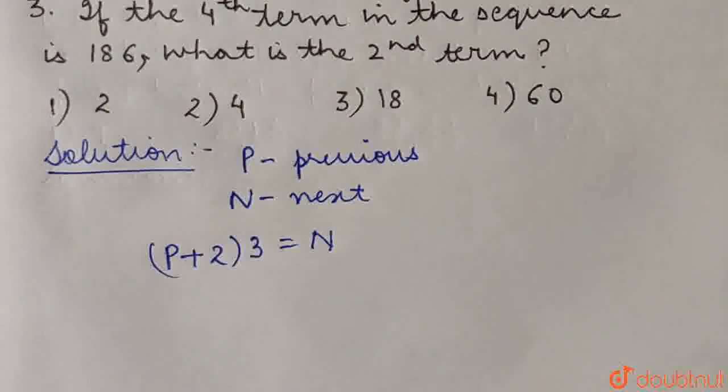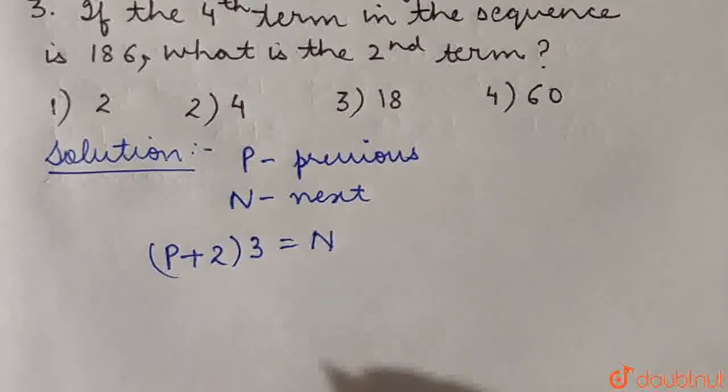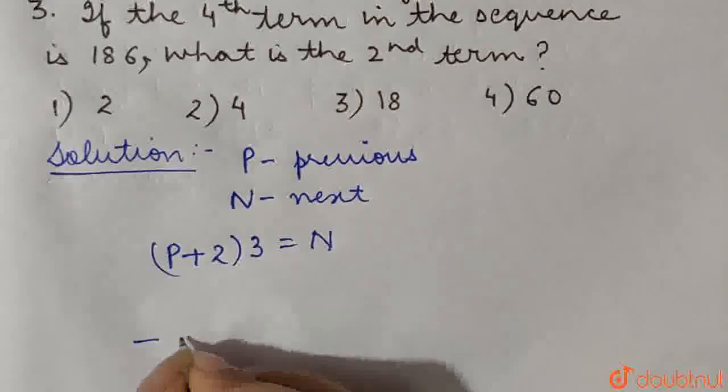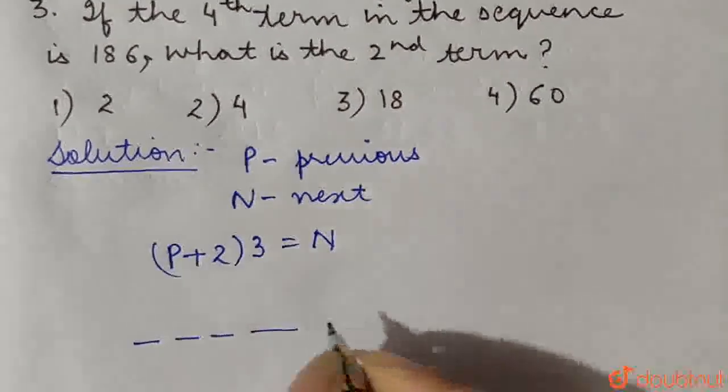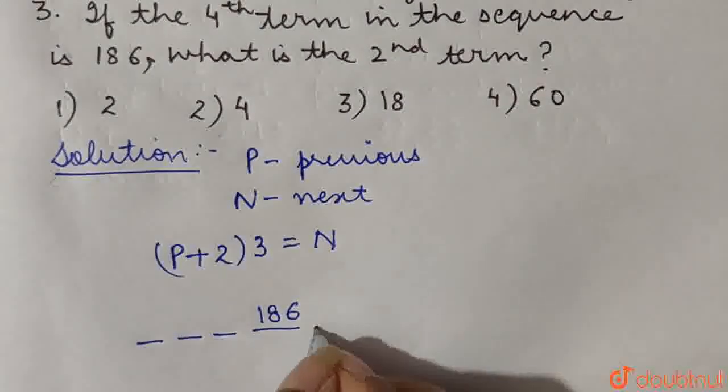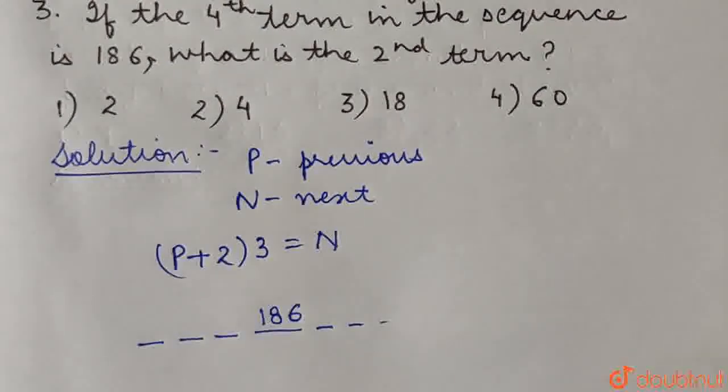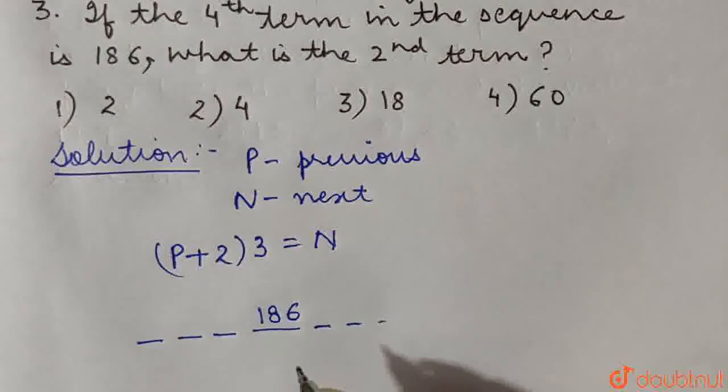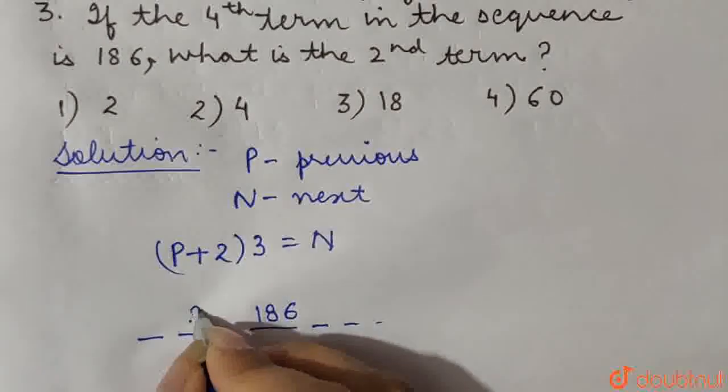Now it has been given to us that the 4th term of the sequence, that means the 4th term of the sequence, this term has been given to us as 186 and there would be more terms in the sequence, and so on. So the 4th term is 186 and we intend to calculate the 2nd term.